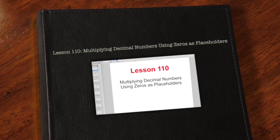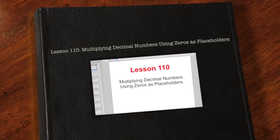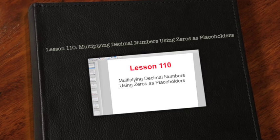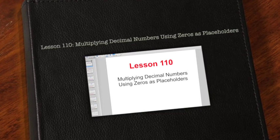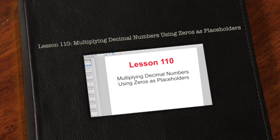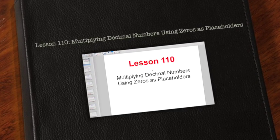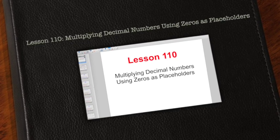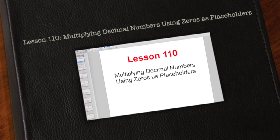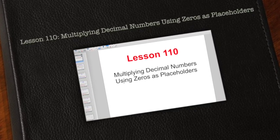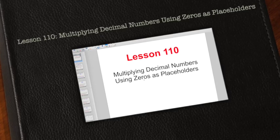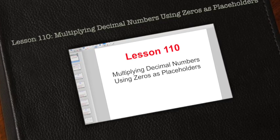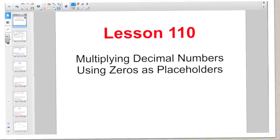Good morning, everybody. Welcome to Math Lesson 110. This is one extra little twist on Lesson 109's concept. We're still talking about multiplying decimal numbers, only now we're also using zeros as placeholders. So let's see what they're talking about there.